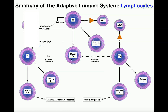Now we have an effector helper T cell, which is going to start the immune response in two ways. An effector helper T cell secretes two cytokines: one is interleukin-2 and the other is interleukin-4.